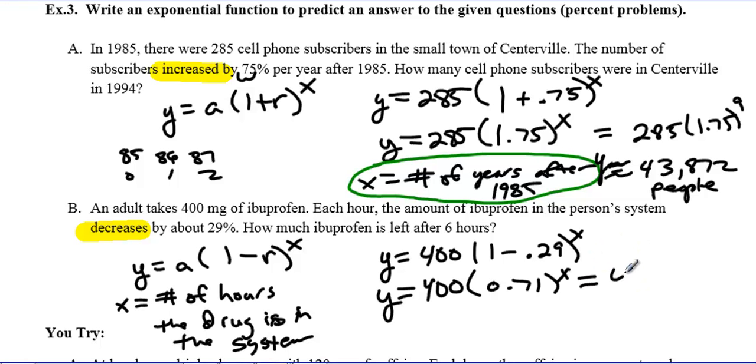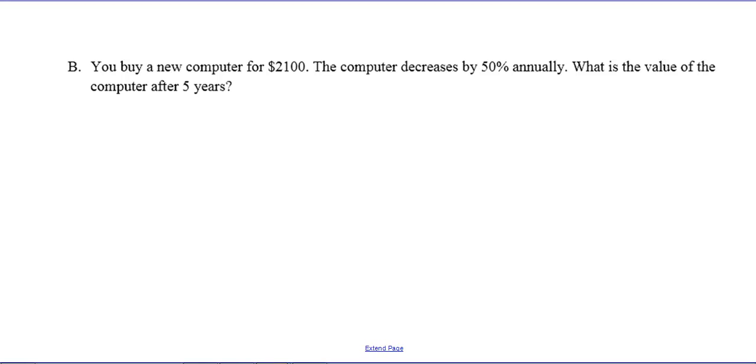I have 400 times 0.71 to the 6th power because we're asked after 6 hours. The amount of ibuprofen left in this person is dropping down to 51.24 milligrams. In the previous examples, I kept saying approximately this many people, we round to the nearest whole person. When we talk about specific weights or measurements, we could have decimals. So there are 51.24 milligrams left in this person's system. You have two U-tries left, and then a blank page at the end. We are done. See you tomorrow.